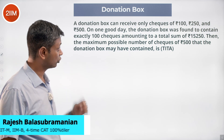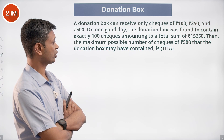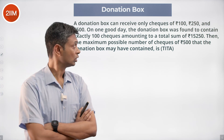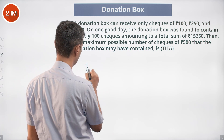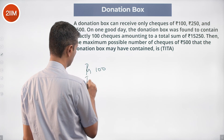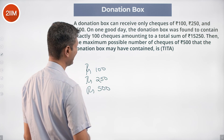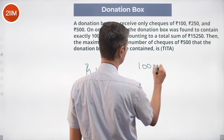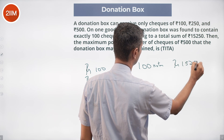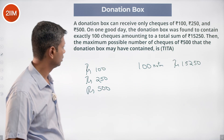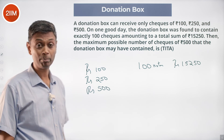A donation box can receive only checks of 100, 250, and 500 rupees. On one good day, the donation box was found to contain exactly 100 checks amounting to a total of 15,250 rupees — that is, 100-rupee notes, 250-rupee notes, and 500-rupee notes, exactly 100 notes amounting to rupees 15,250. The question is: what is the maximum possible number of checks of 500 rupees that the donation box may have contained?